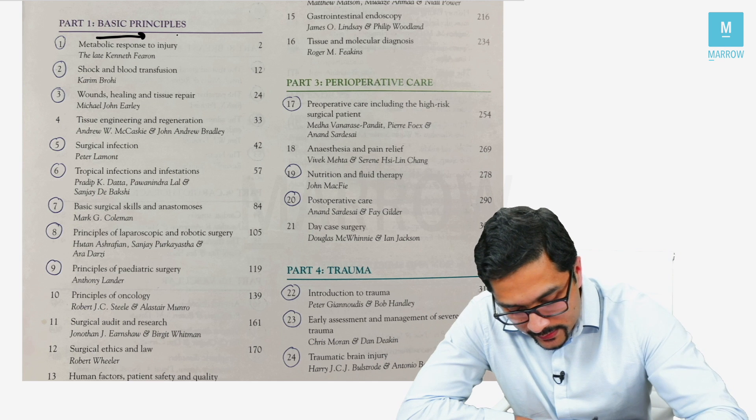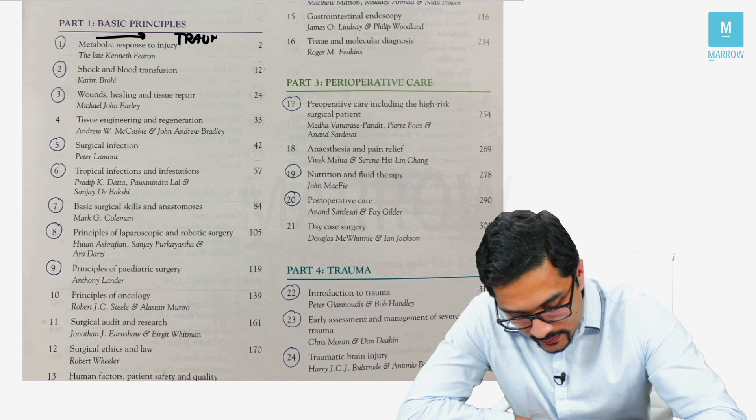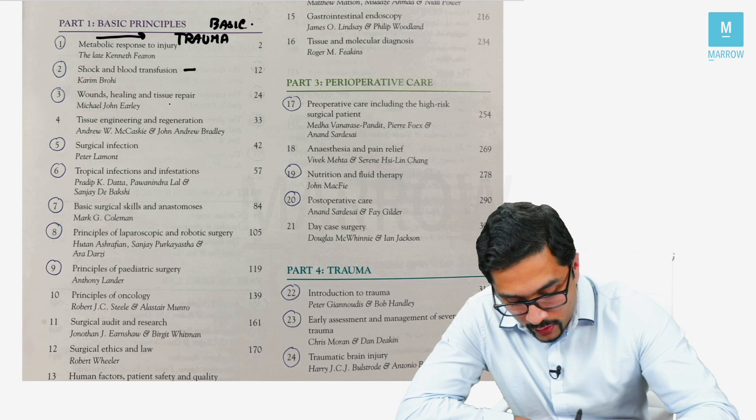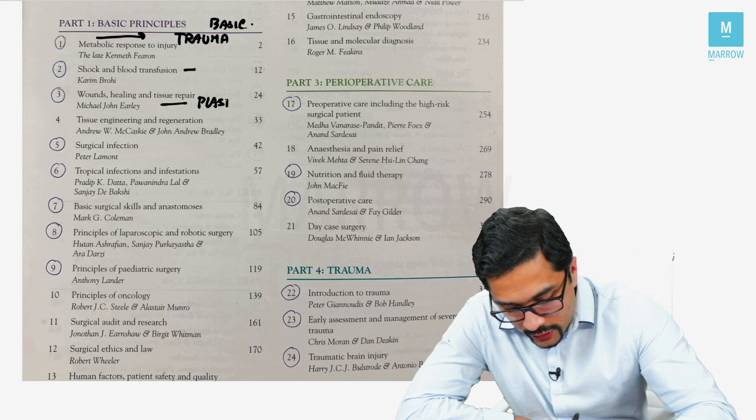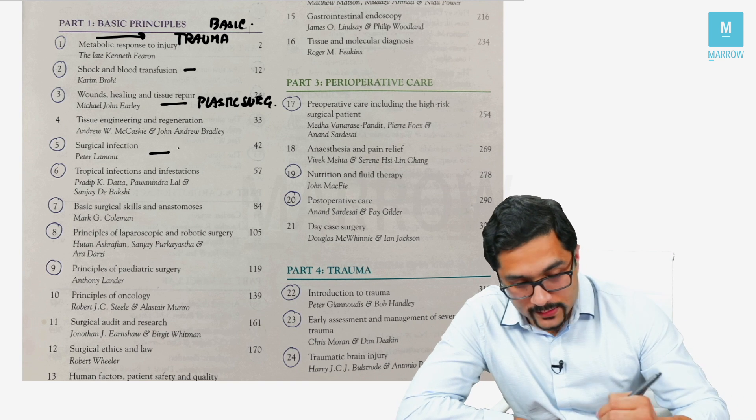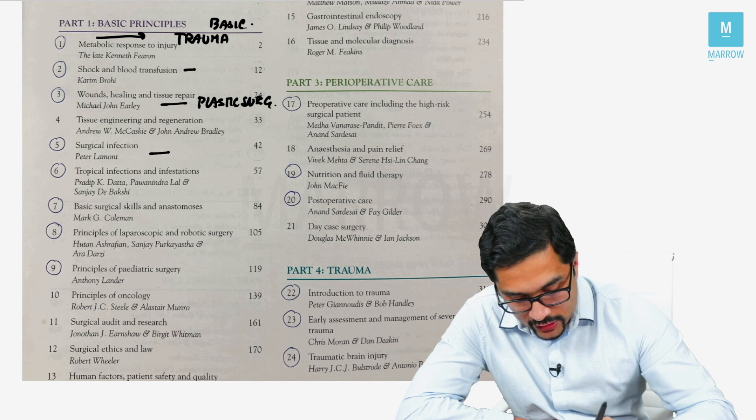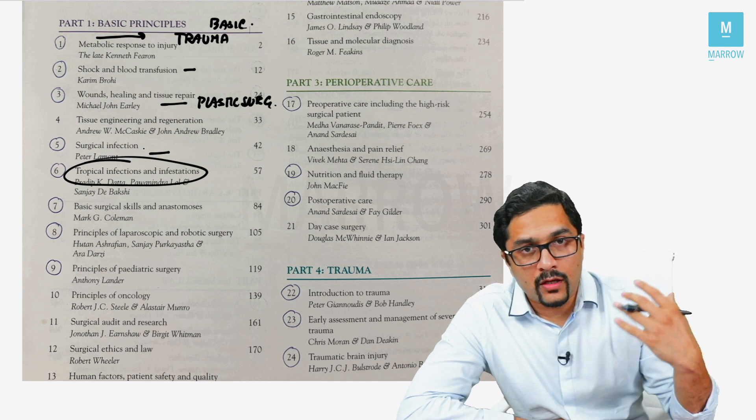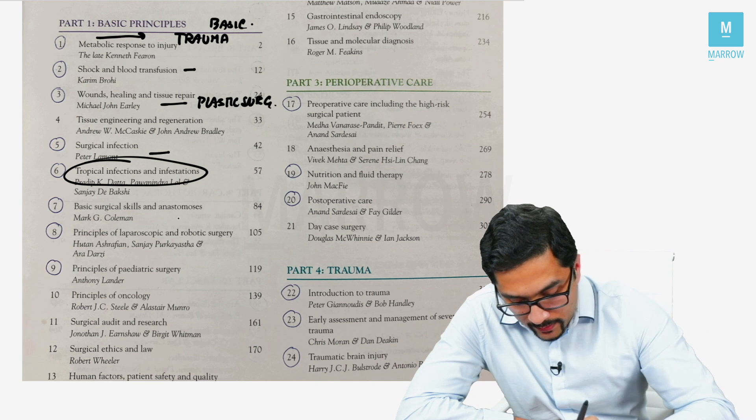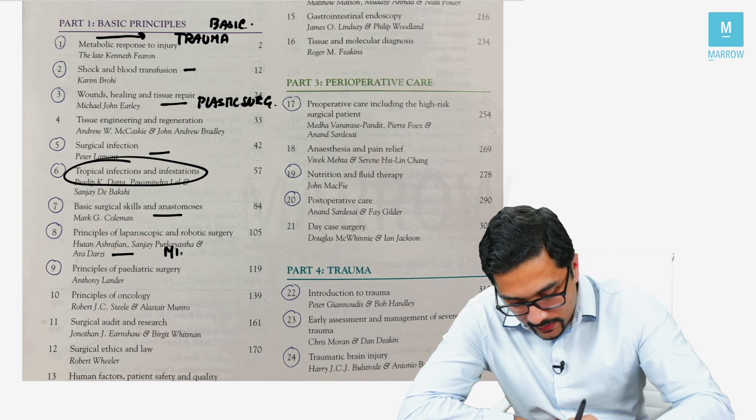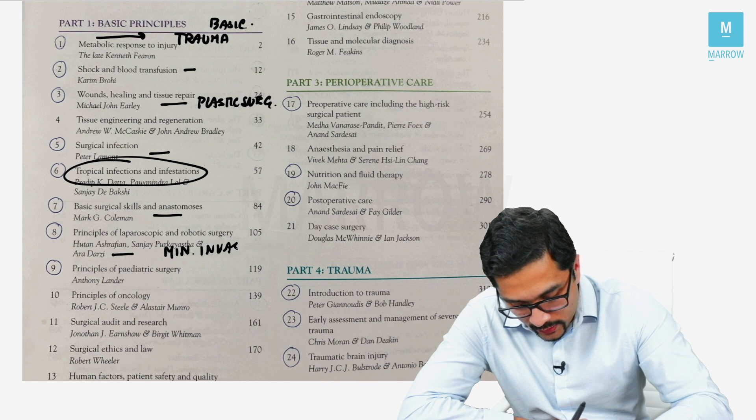All these chapters: metabolic response to surgery is with trauma, this is in the trauma module. Shock and blood is a separate module. Wounds is with plastic surgery module. Surgical infection is a separate module. Tropical infections and infestations I have covered throughout wherever there was an opportunity. Basic surgical skills and anastomosis is a separate module. Laparoscopic surgery, minimally invasive surgery is a separate module.